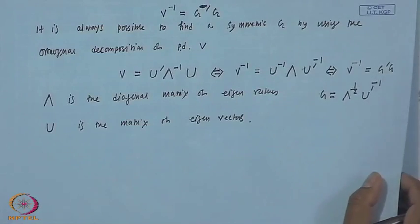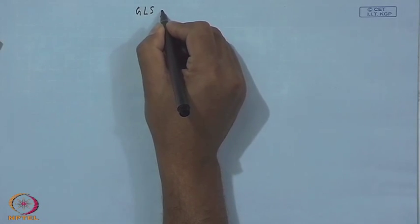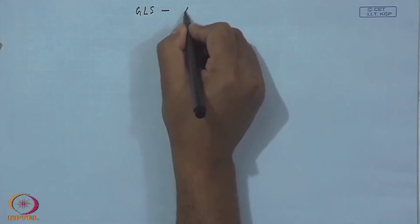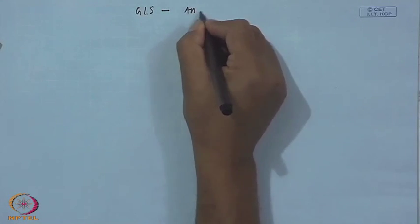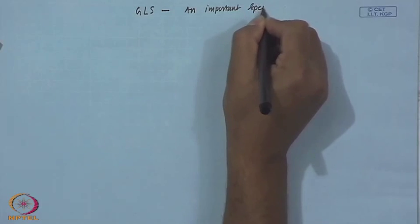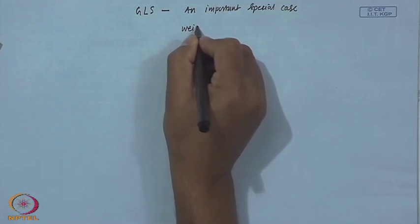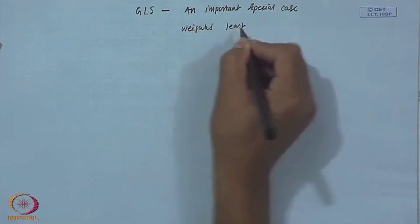Now we will show how weighted least square can be obtained as a particular case of generalized least square. We already know what generalized least square is, and an important special case is weighted least square.